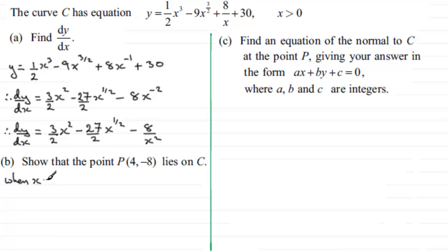When x = 4, substituting into the equation for y gives: y = (1/2)(4³) - 9(4^(3/2)) + 8/4 + 30.